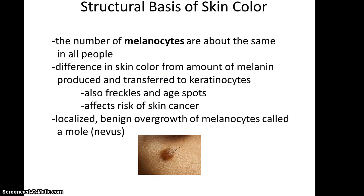Melanocytes are the cells that produce the pigment, and they are basically the same in all people — we all have about the same number of melanocytes. But in people who have darker colored skin, their melanocytes produce more melanin and so are transferring more of it to the keratinocytes. You can also see an uptick in melanin production in places referred to as freckles and age spots, which help reduce the risk of skin cancer. It's also worth noting that a mole is basically a localized benign overgrowth of a melanocyte.